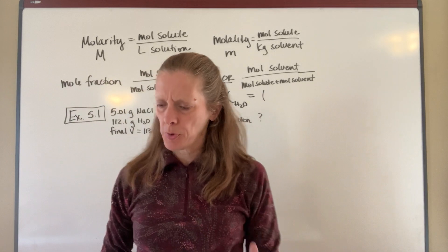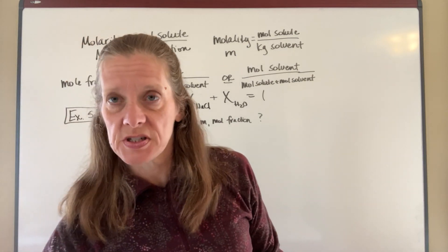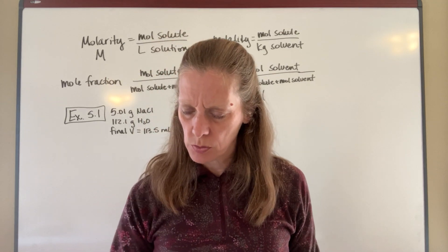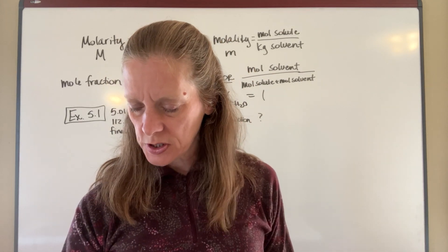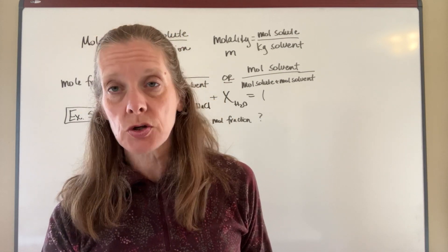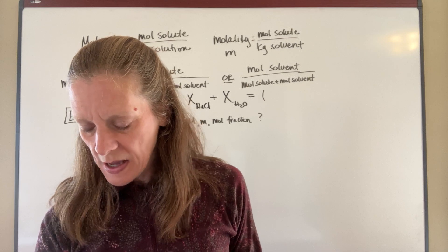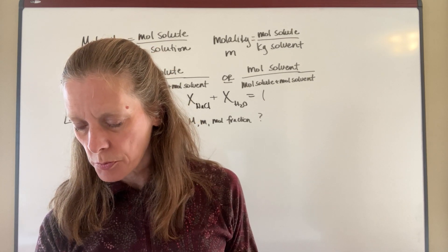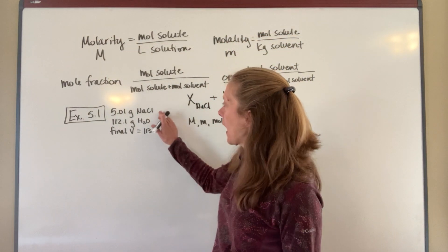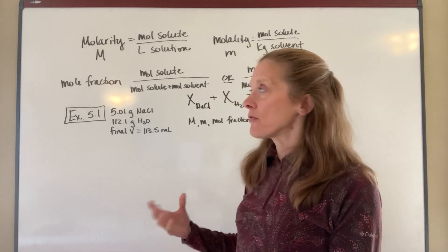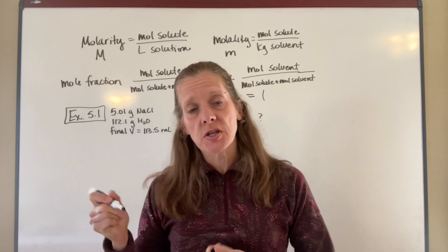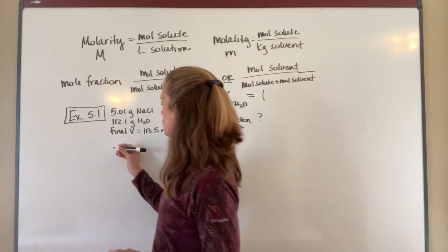Let's work through Example 5.1. A chemist takes 5.01 grams of sodium chloride and dissolves it in 112.1 grams of water; the total volume of the resulting solution is 113.5 milliliters. Calculate the concentration of sodium chloride in molarity, molality, and mole fraction. I've started with grams of NaCl, and everything requires moles of NaCl, so the first thing I've got to do is convert grams to moles.